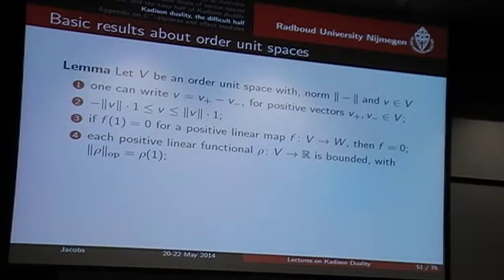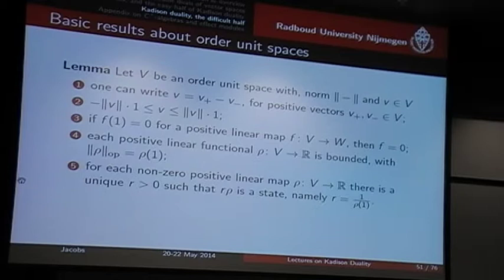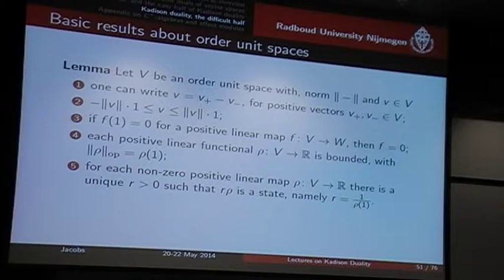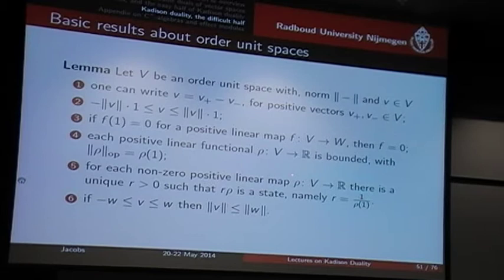If I have a positive unital functional, then it's automatically bounded, and this bound is given by rho of one. Thus, if it's unital, then its norm is one. Each non-zero positive linear map can be turned into a state by multiplying it with an appropriate factor — you simply divide by one over rho of one. The non-zero aspect is important because of this property. This idea of turning positive maps into states will be used later.